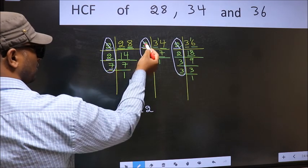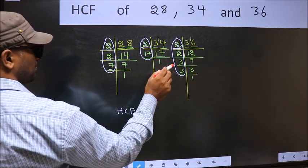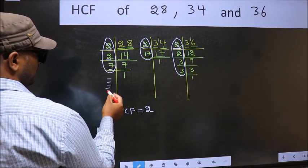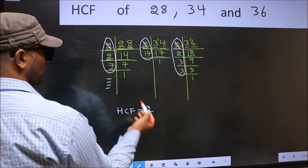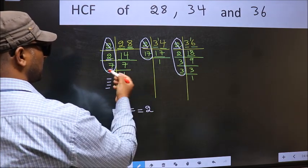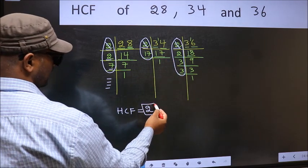Next number 7. Do we have 7 here? No. So no need for us to check in the other place. No more numbers have been left out. So we got only one number 2 present in all the 3 places. So 2 itself is our HCF.